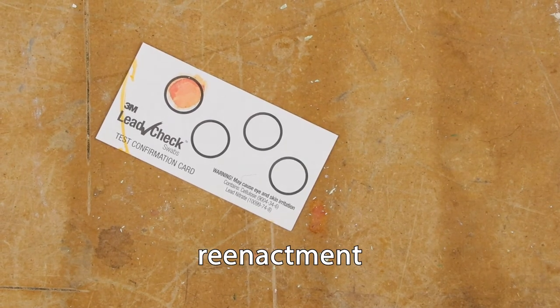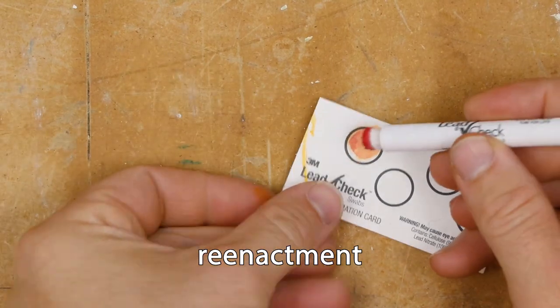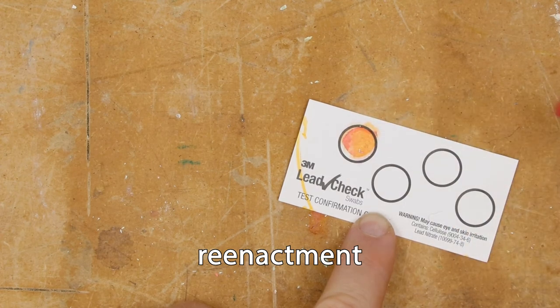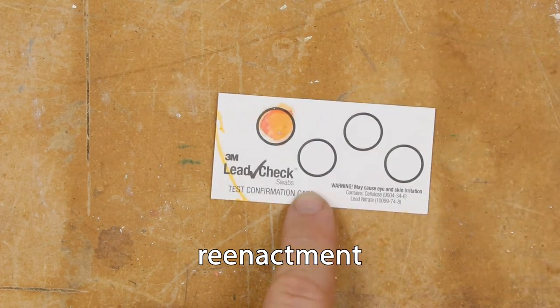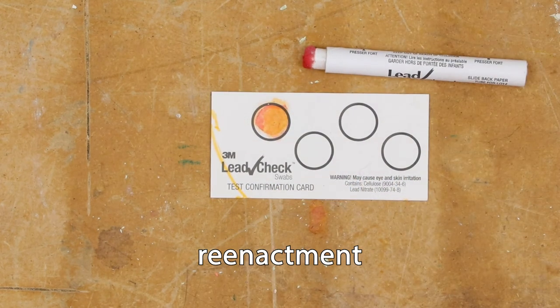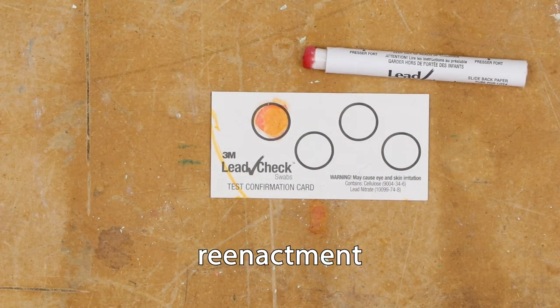The test confirmation card is a quality assurance measure to confirm the reactivity of the 3M lead check reagents when the test result is negative. On each card are dots containing a small amount of lead. If a pink or red color appears on the confirmation card, the swab was activated properly.